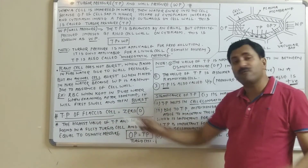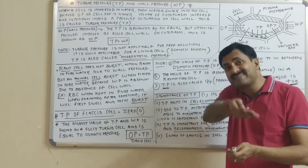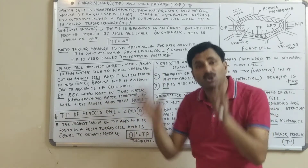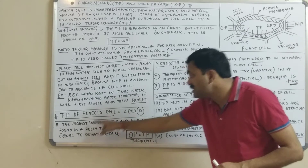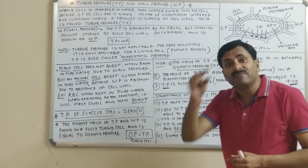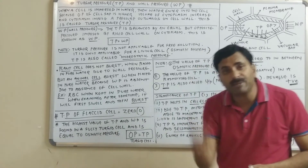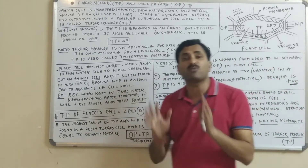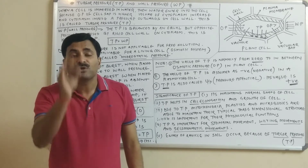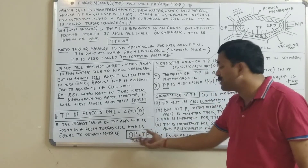A few more points about TP: The TP of a flaccid cell is always zero. The highest value of TP and WP is found in a fully turgid cell, where the value of TP equals the osmotic pressure (OP = TP). So in a flaccid cell TP is zero, and in a fully turgid cell TP is maximum and equal to OP. The value of TP in a plant cell normally ranges from zero up to the osmotic pressure.